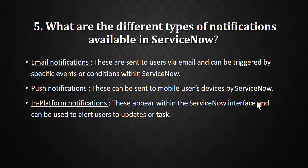The next question is: what are the different types of notification levels in ServiceNow? There are basically three types, though you may find four or five. First, email notifications — these are sent to users via email and can be triggered by specific events or conditions, such as when a record is inserted or updated.